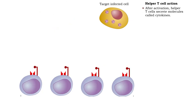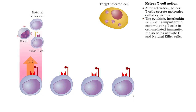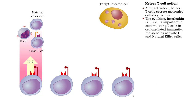Once activated, helper T cells secrete cytokines. One cytokine is interleukin-2, which is important in most immune responses. It is also known as T cell growth factor, since it acts as a co-stimulator for T cells. It also enhances the activation of B cells and natural killer cells.